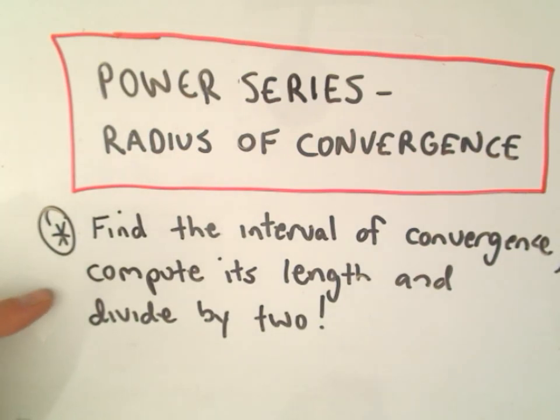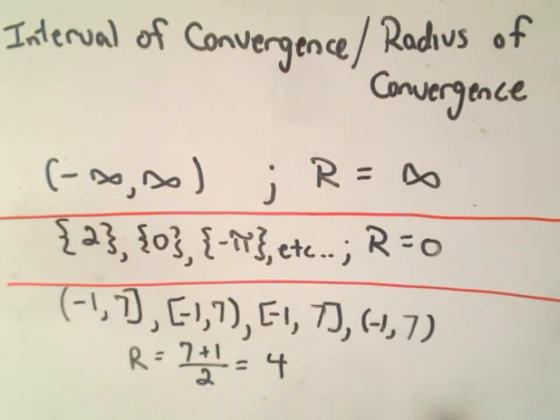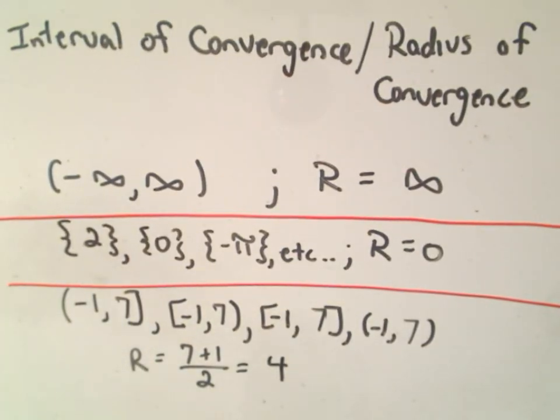To find the radius of convergence, you first have to find the interval of convergence. Then you simply find the length of that interval and divide by 2. I've got a bunch of intervals of convergence on the left side and the associated radius of convergence on the right side.